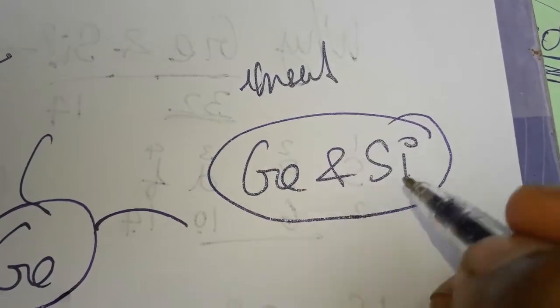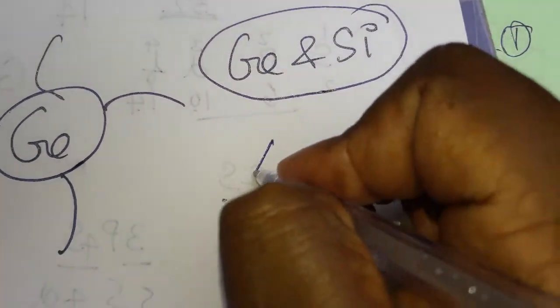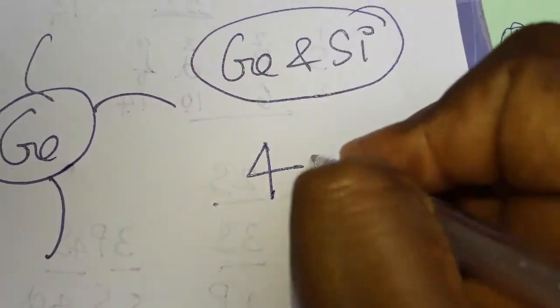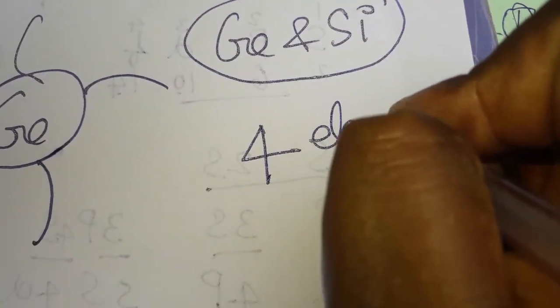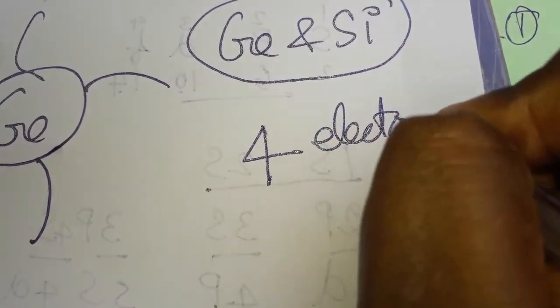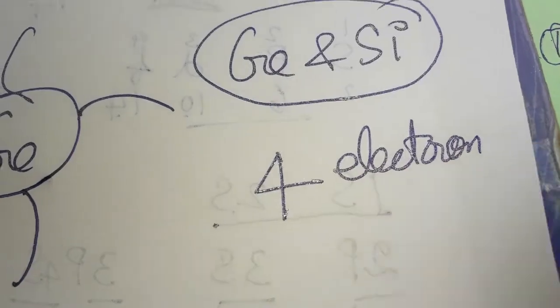That is the reason germanium and silicon are taken as semiconductors. It is a pure form of semiconductor because the outermost orbit has four electrons. Thank you.